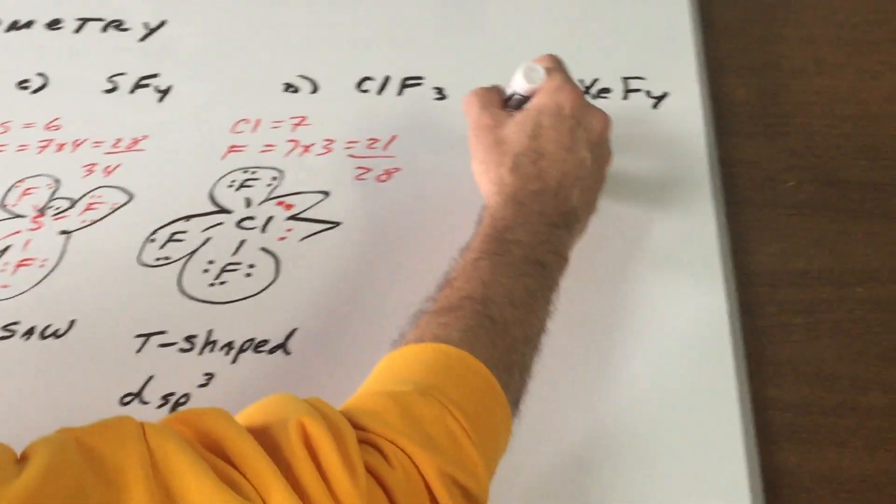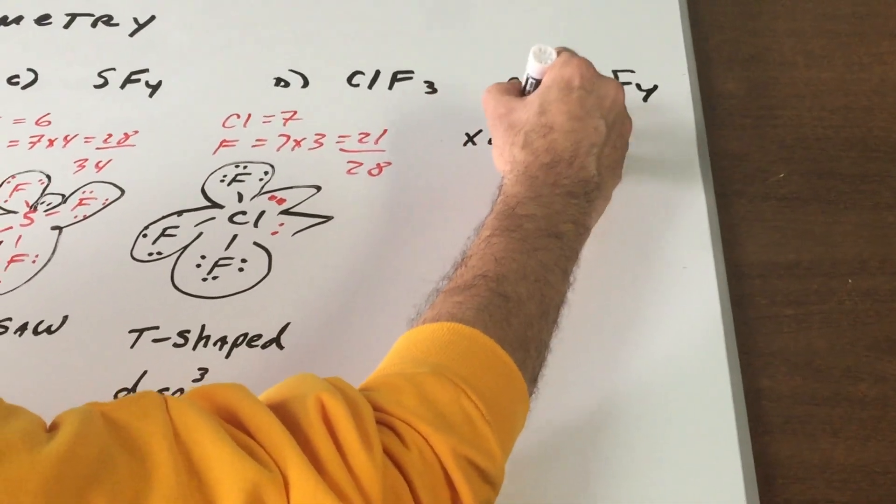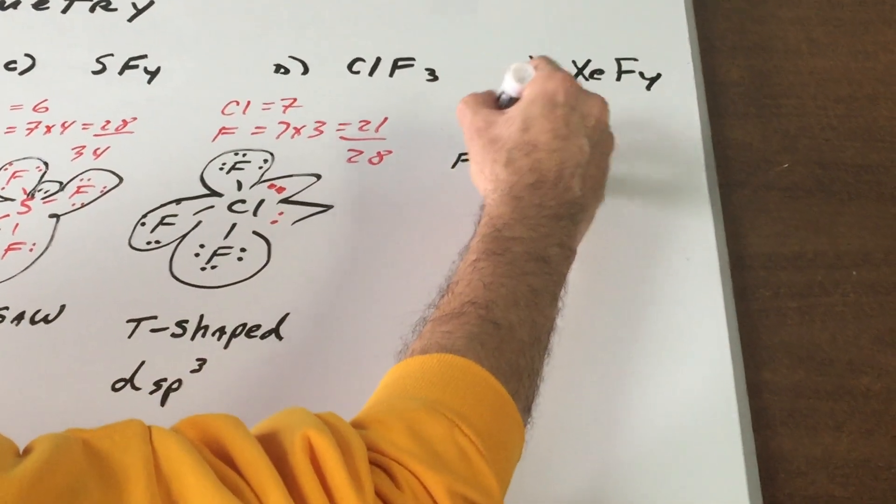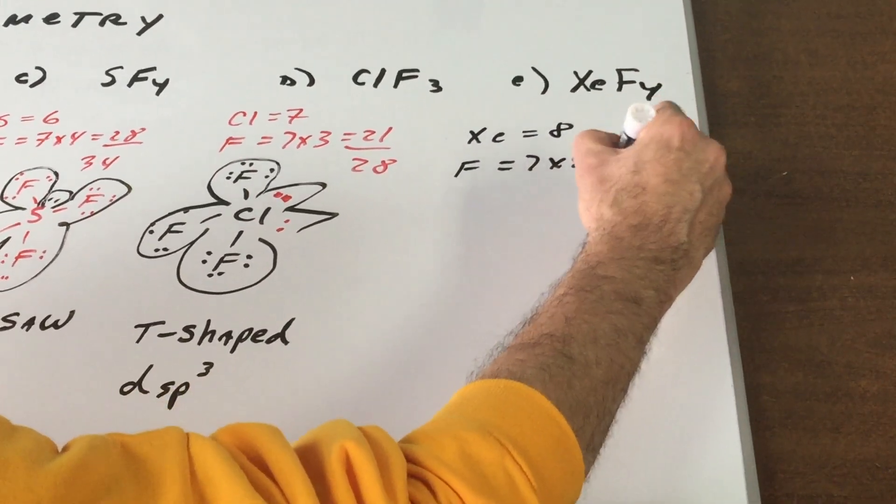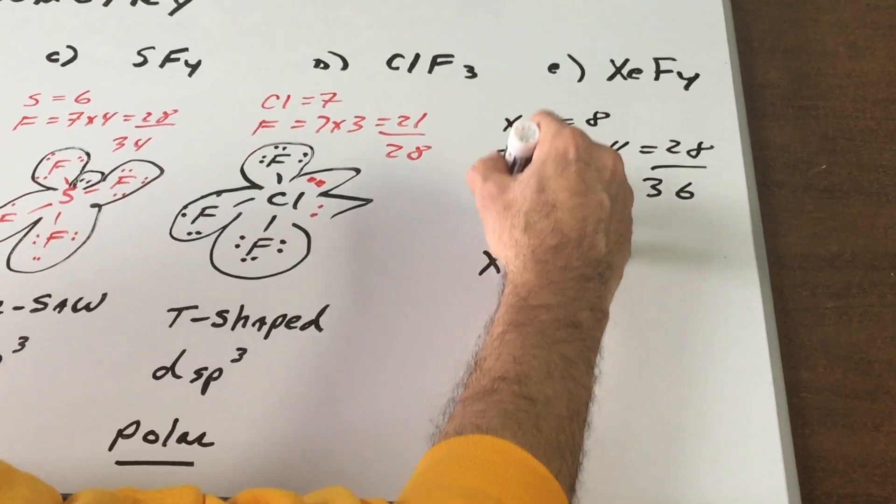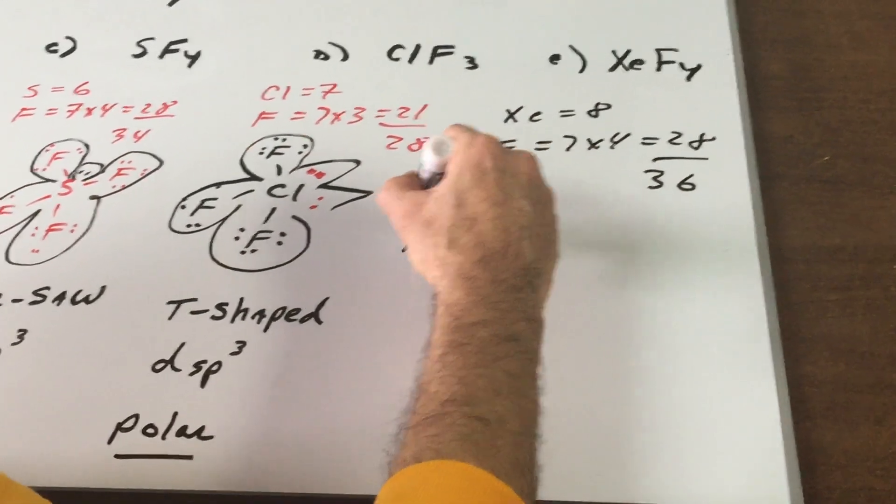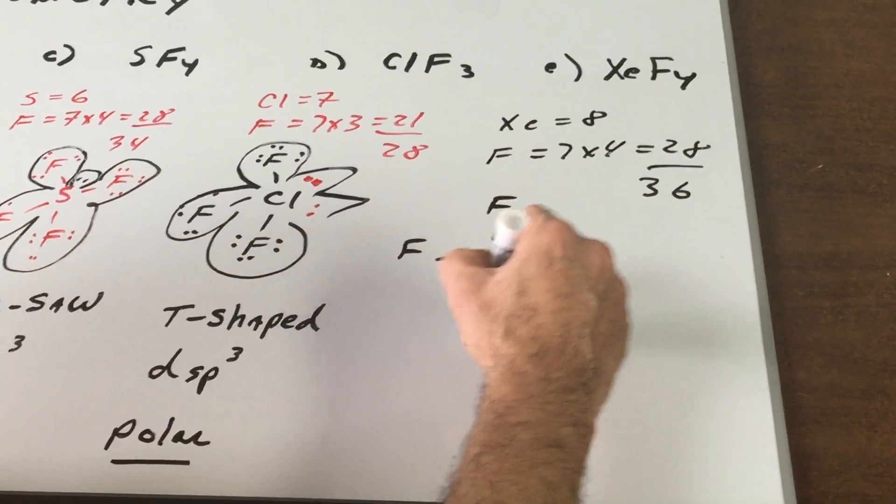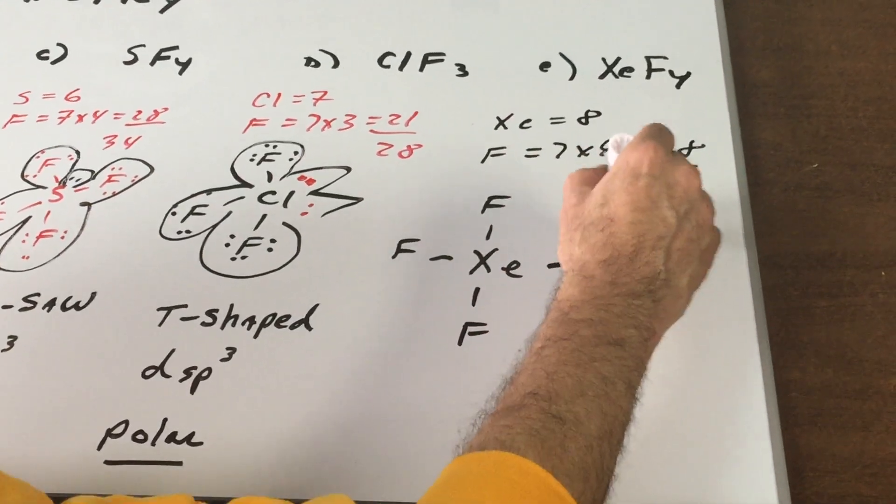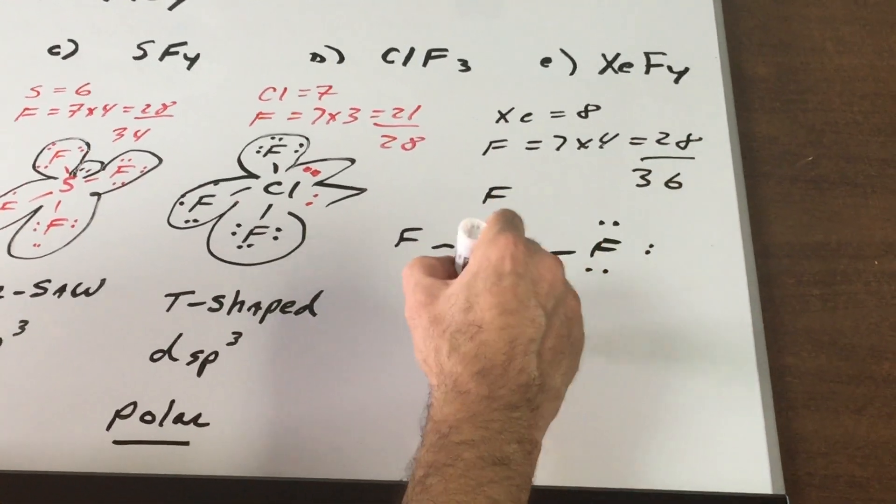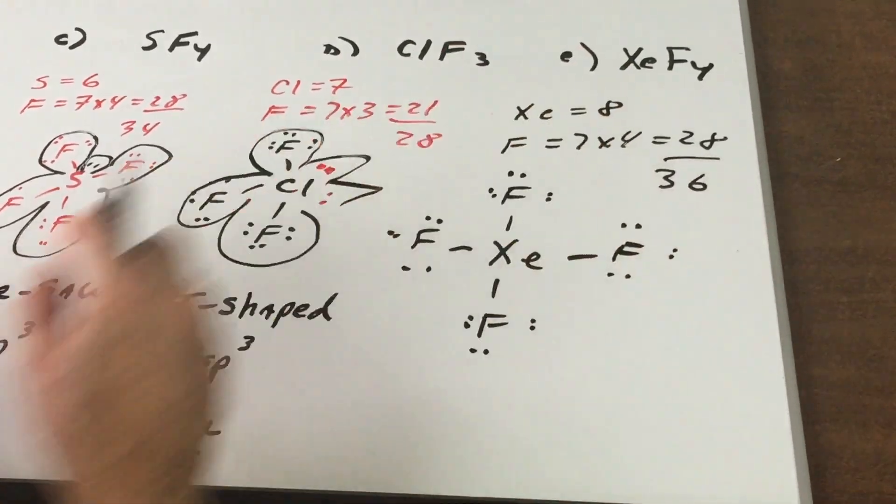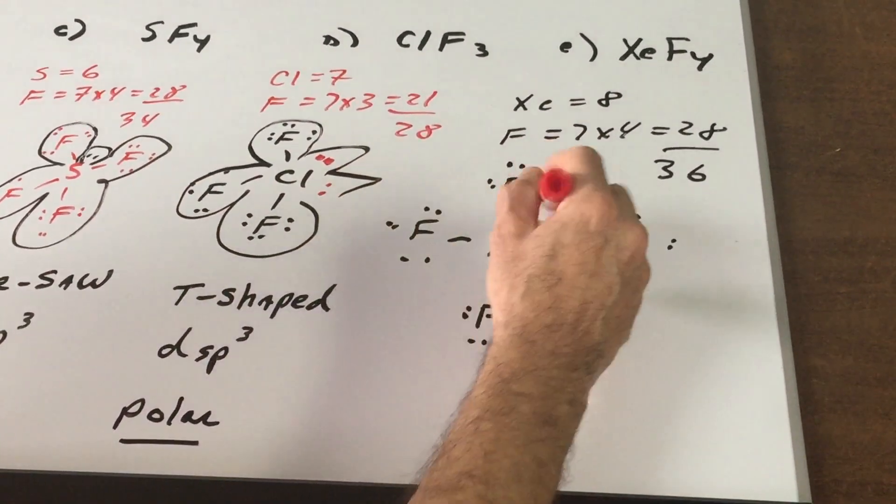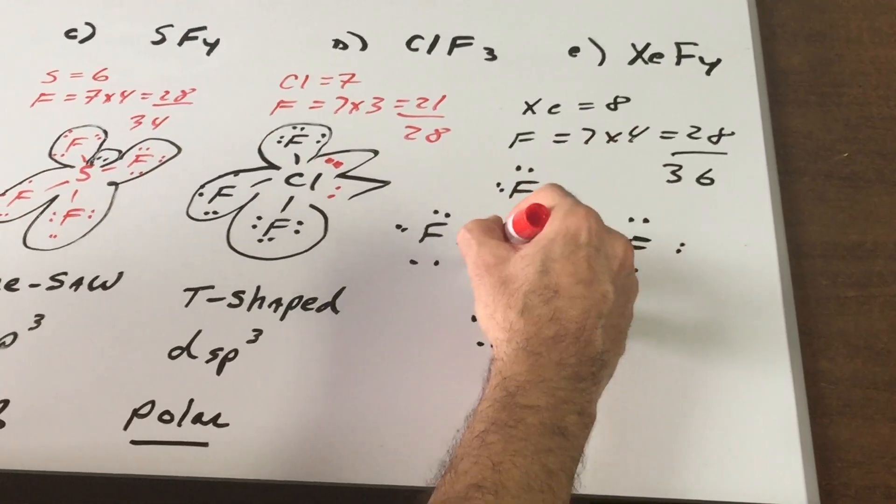Last but not least, I go to here, xenon is in group eight, fluorine is in seven, fours are 28. This gives me a total of 36. You put the central atom in. This is a little tricky. You give the outer ones eight. Uh-oh, this gives me 32. So you're going to have to put two more in. I'll put two here and two here.